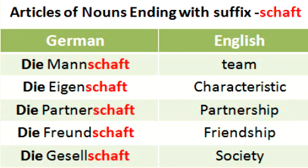The next example is 'Partnerschaft,' which means 'partnership' — again a feminine noun, so we use the article 'die.' Next is 'Freundschaft,' which means 'friendship.' This is again a feminine noun with the article 'die.'